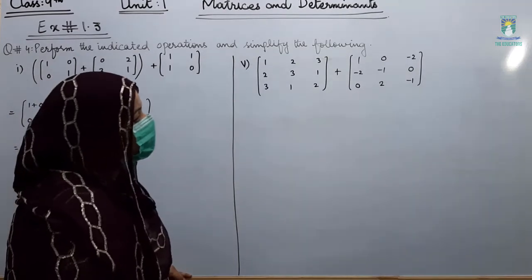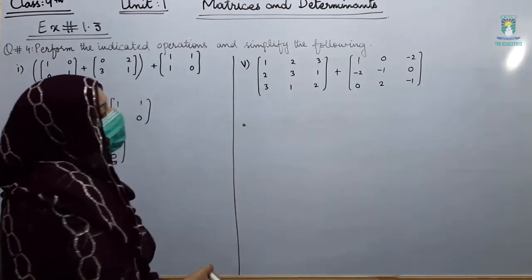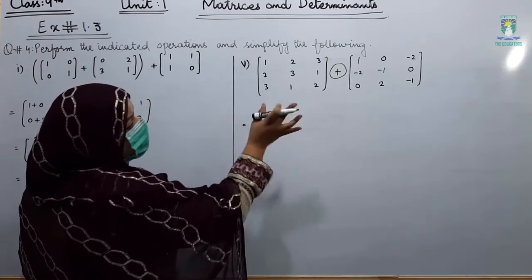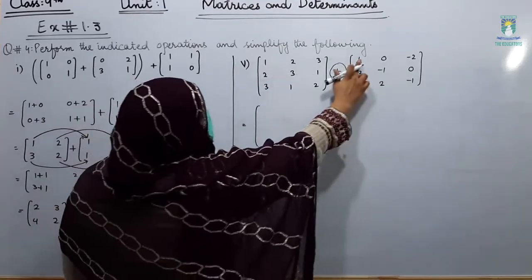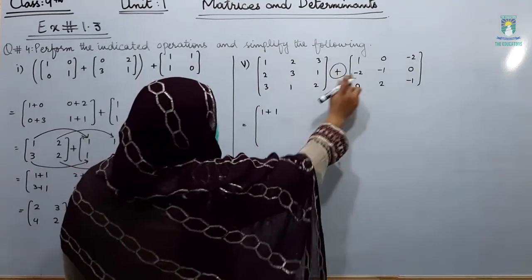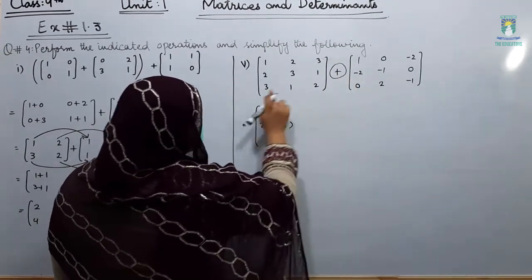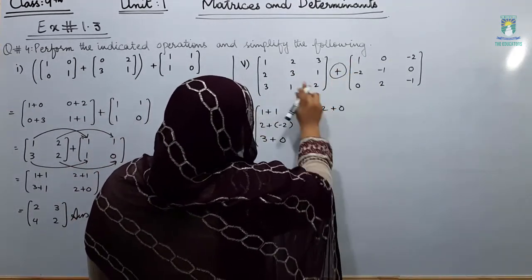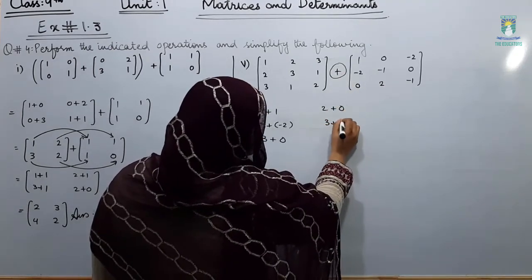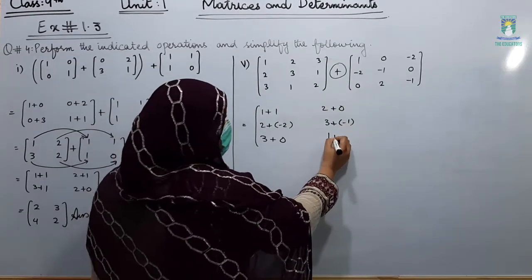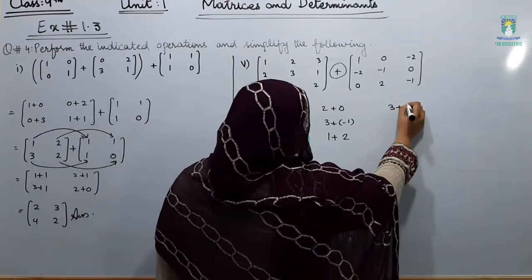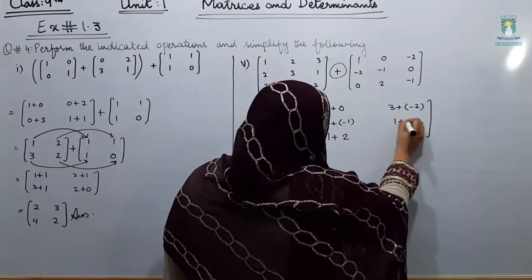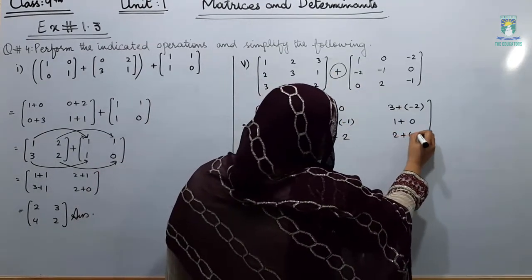Now students, we are going to solve part number 5. Here we have two matrices and we are going to add them. Addition — same method: we add the corresponding entries. 1 plus 1, 2 plus minus 2, 3 plus 0, 2 plus 0, 3 plus minus 1, 1 plus 2, and then continuing with the remaining entries.